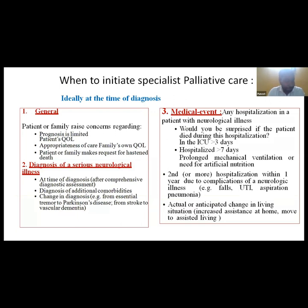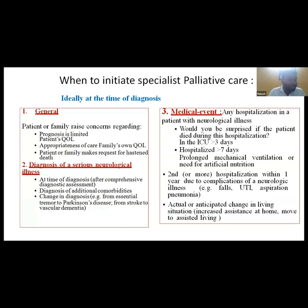Ideally specialist palliative care should start at the time of diagnosis, but due to the limited number of palliative physicians this is very hard. The general criteria for referral include: when the patient or family has concerns directly regarding prognosis that hamper quality of life; when there is request for hastened death or questions about appropriateness of care; and at the time of diagnosis of a serious neurological illness, diagnosis of additional comorbidities, or change in diagnosis.